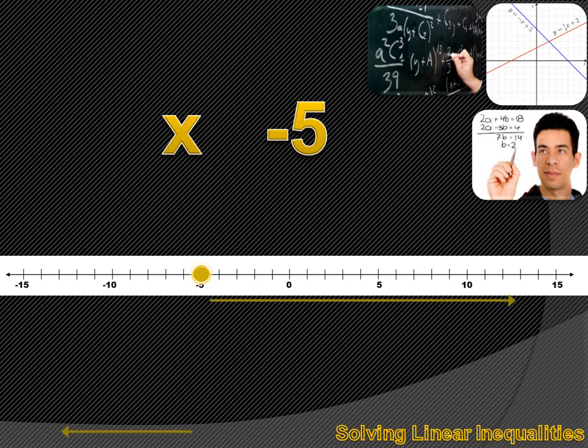What if the arrow pointed to the right? Then it would read X is greater than or equal to minus 5.